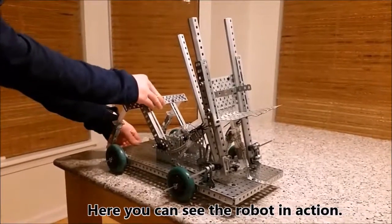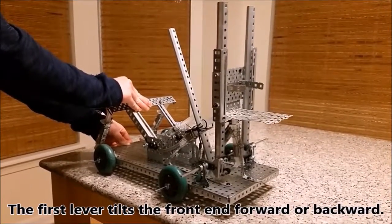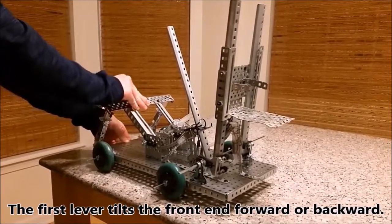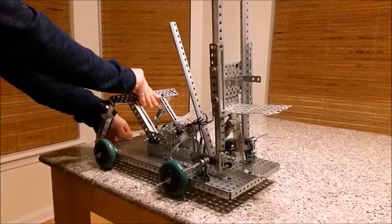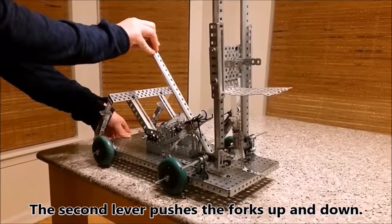Here you can see the robot in action. The first lever tilts the front end forward or backward. The second lever pushes the forks up and down.